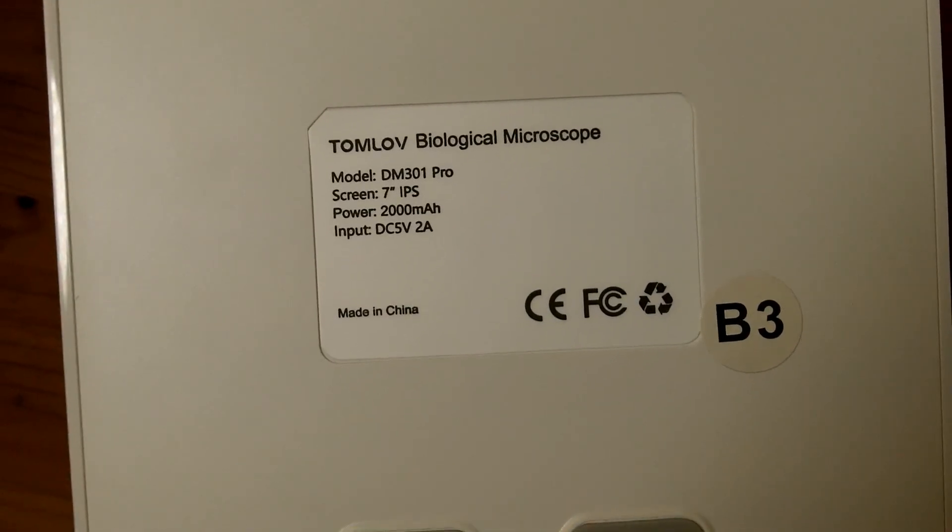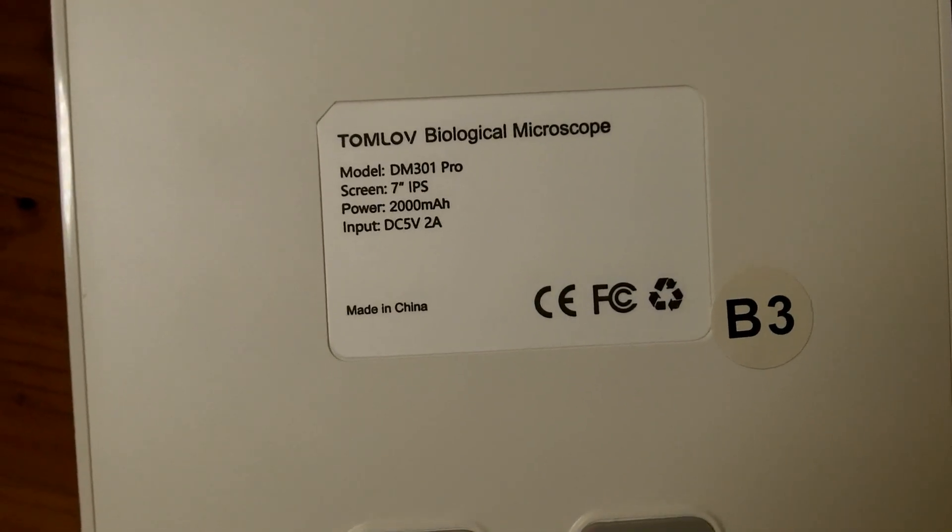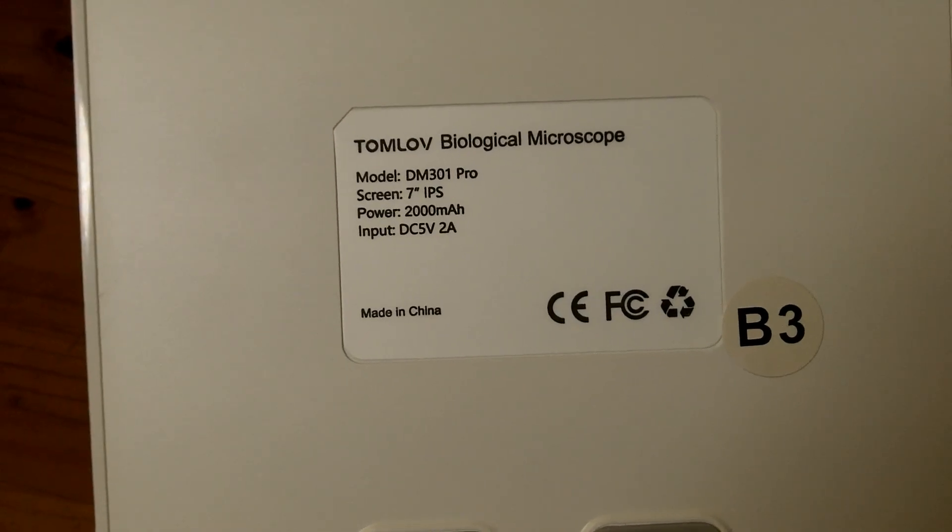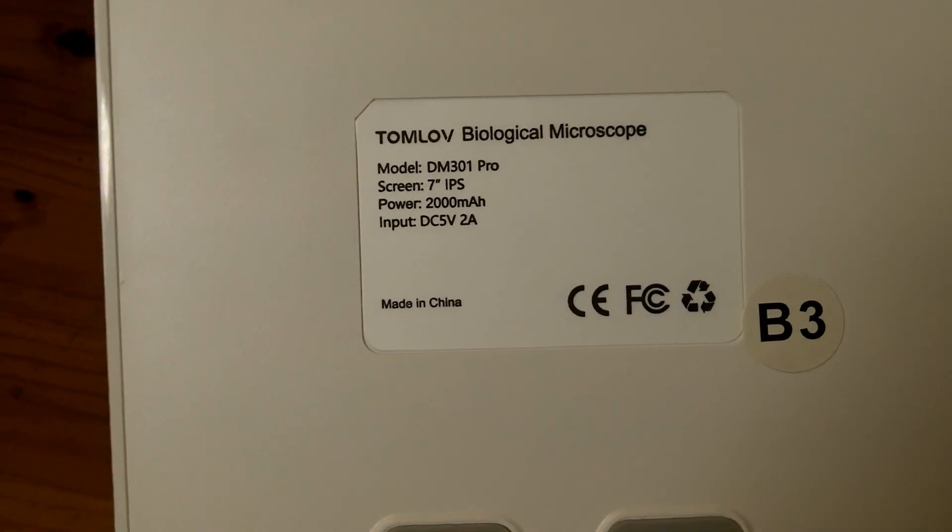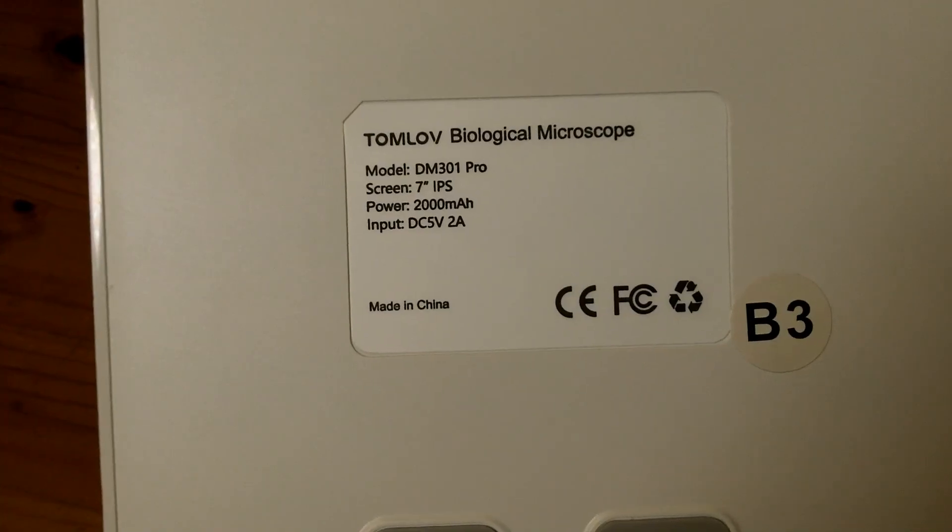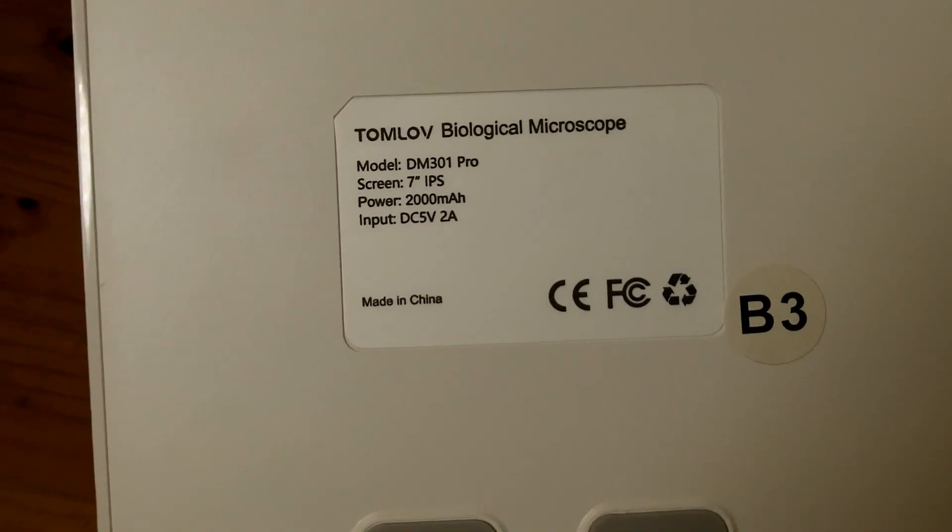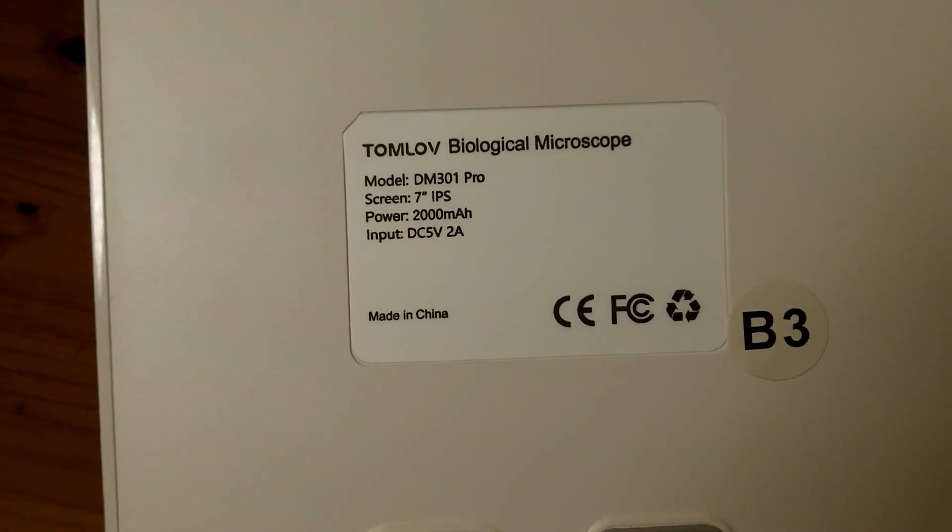Here's the nameplate. It's the TomLiv Biological Microscope. Its model is DM301 Pro. It has a 7-inch IPS display, and it says its power is 2 amps. And the input is 5 volts DC at 2 amps.